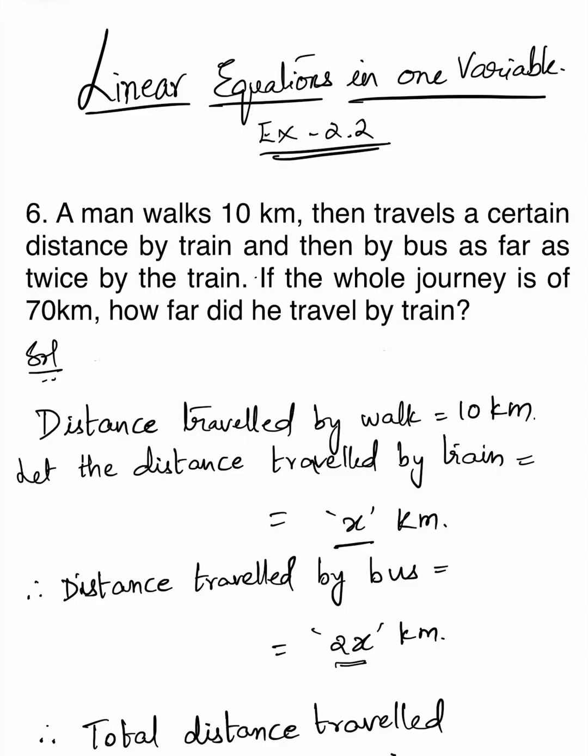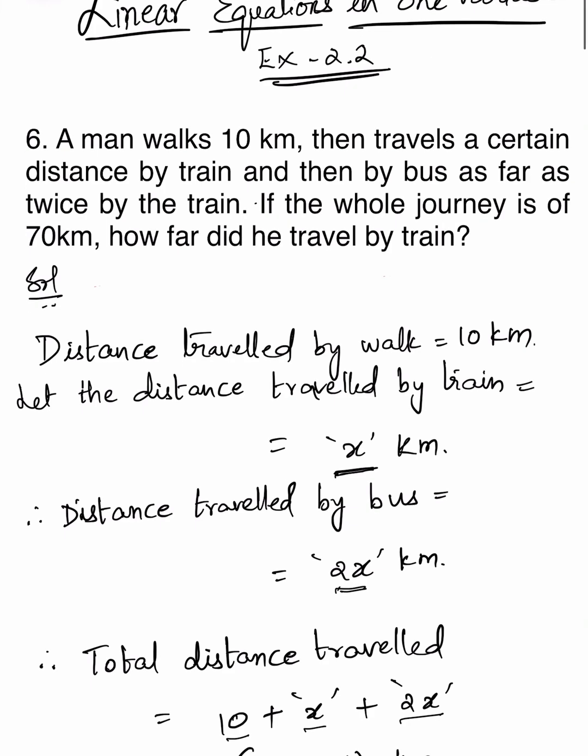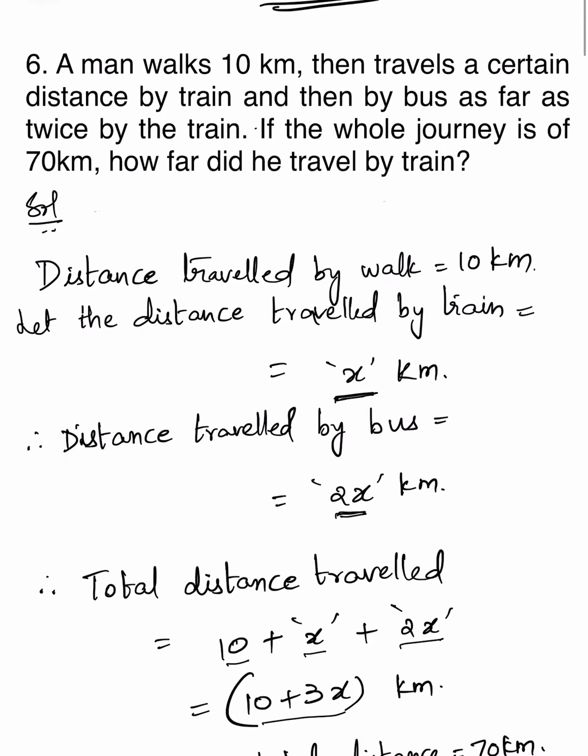Linear equations in one variable, exercise 2.2 part 2. A man walks 10 km, then travels a certain distance by train, and then by bus — as far as twice the distance by train. If the whole journey is 70 km, how far did he travel by train? Distance traveled by walk is 10 km. Let the distance traveled by train be x km. Therefore, distance traveled by bus will be 2x km.